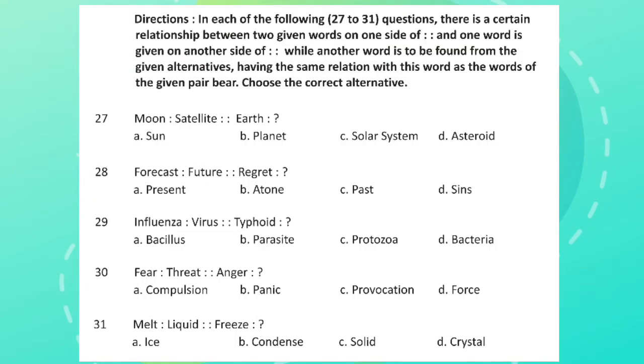Directions: In each of the following 27 to 31 questions, there is a certain relationship between two given words on one side of columns and one word is given on another side of columns, while another word is to be found from the given alternatives having the same relation with the word as the words of the given pair. Choose the correct alternative.